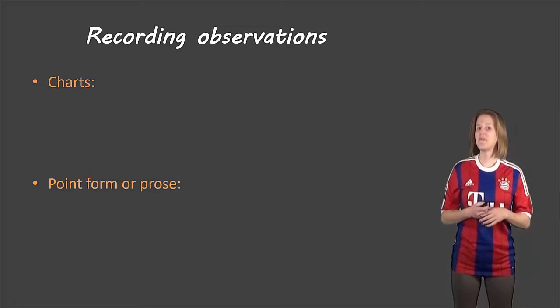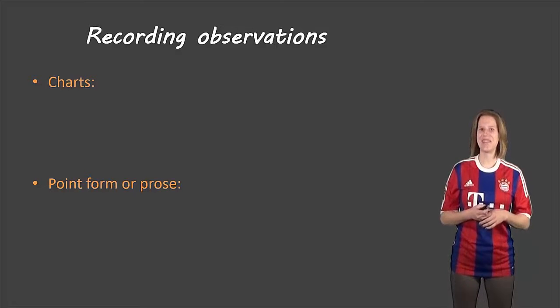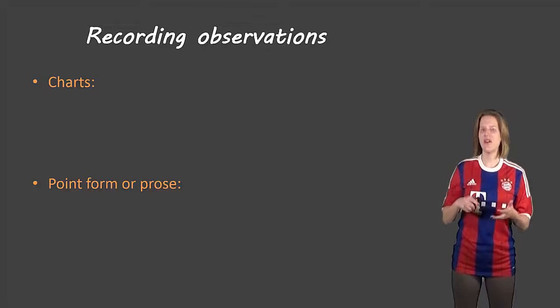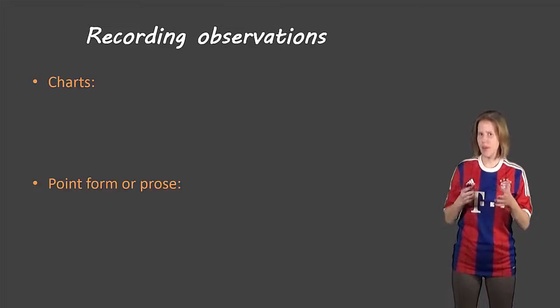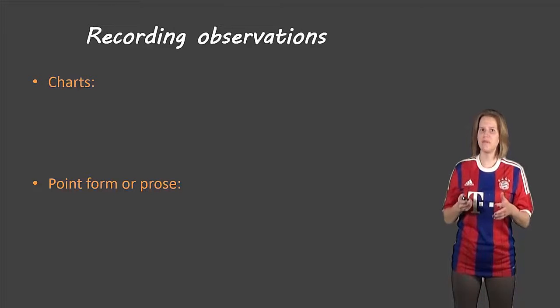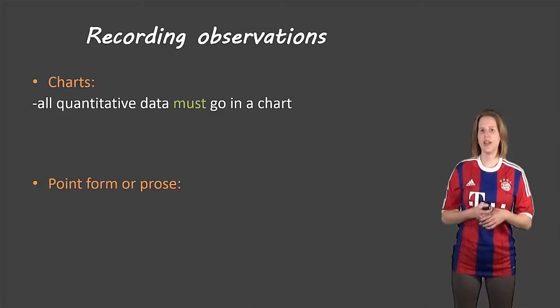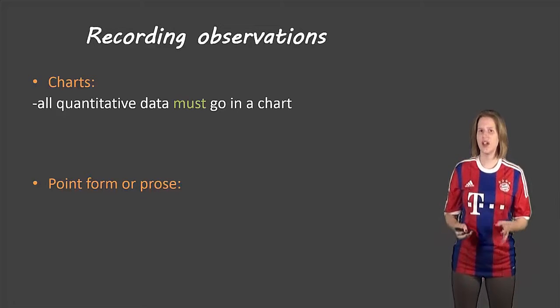Now where do we put our observations in the observation section? Well, there are two places, either in a chart or in paragraph form or point form depending on what's more appropriate at that point. So charts, all quantitative data goes in a chart. It must go in a chart. It doesn't belong anywhere else.